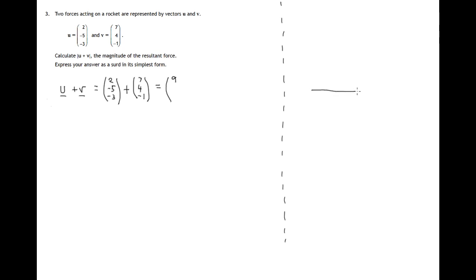Adding vectors means we add the corresponding components. So the x component of the sum will be 2 plus 7, that's 9. For the y components: negative 5 plus 4 — let's go to a number line, because remember this is a paper where you're not allowed calculators. So negative 5 plus 4: travel to negative 5 and then add 4, we'll end up at negative 1.